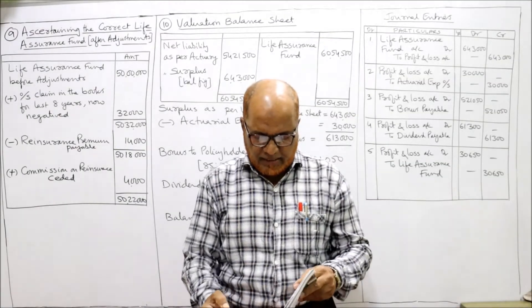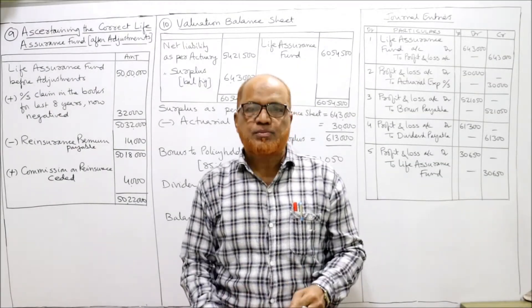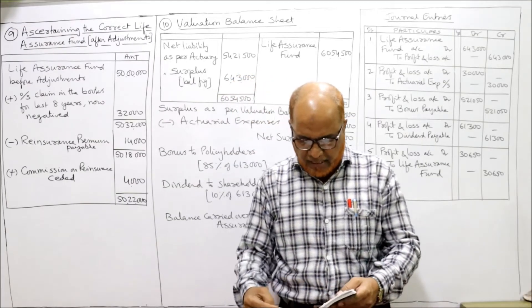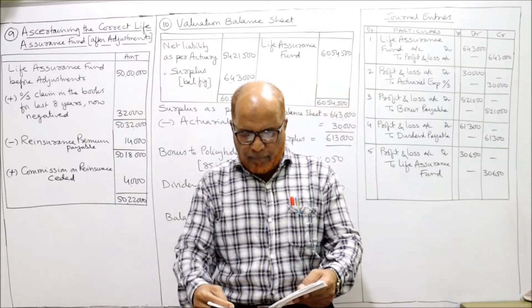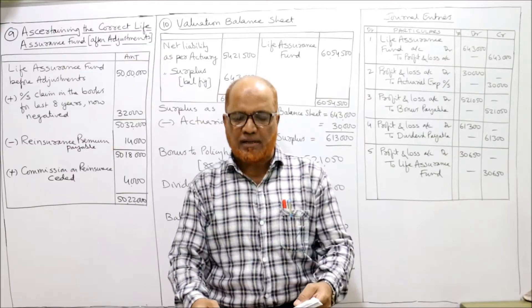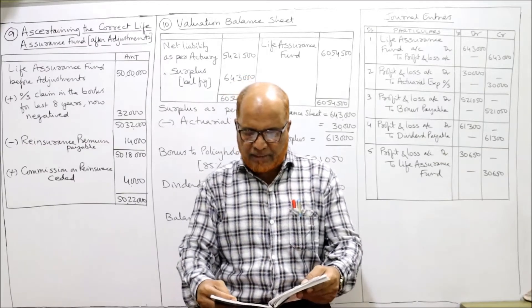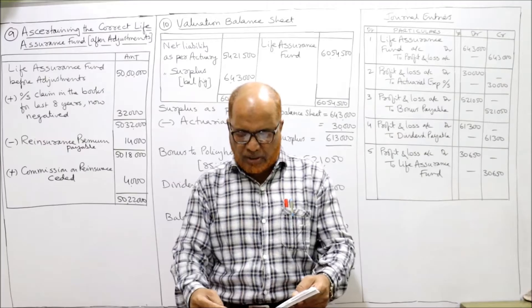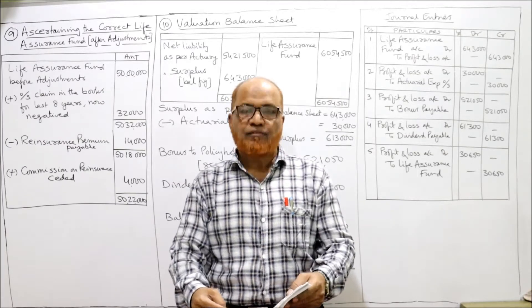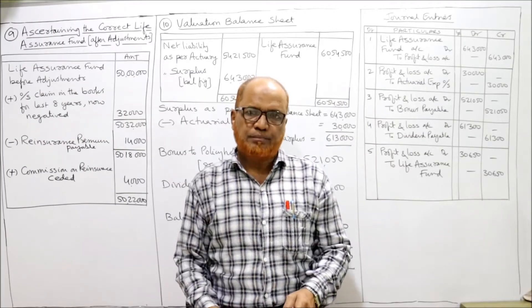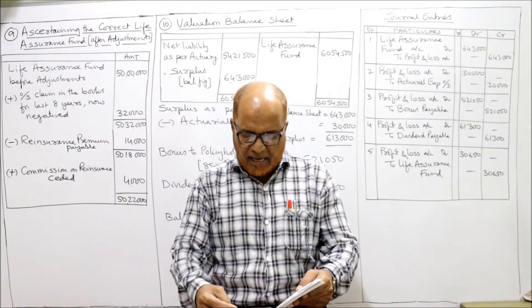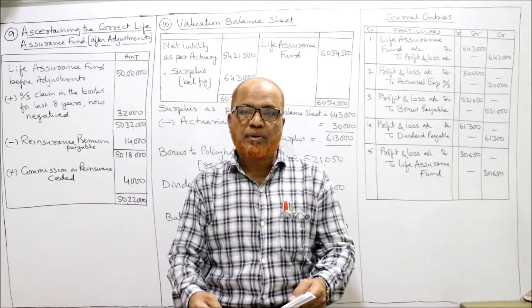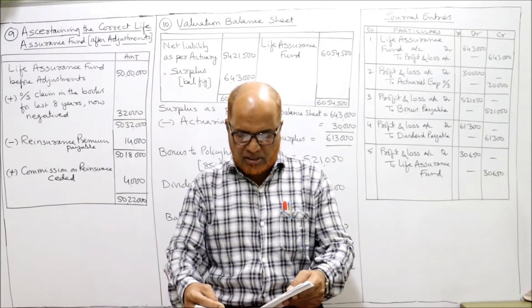Now we'll start the next problem, that is problem number nine. Eight problems so far we have completed as short problems. In the ninth problem, a company dealing in life insurance disclosed a fund of 50 lakh on 31st March 2003, before taking the following adjustments into consideration. Fund means life insurance fund.